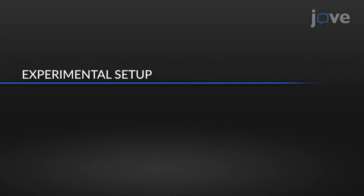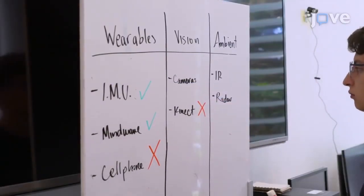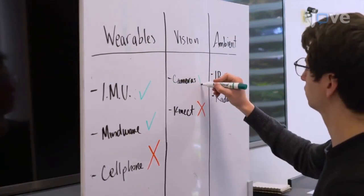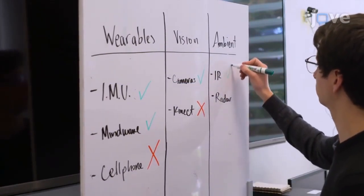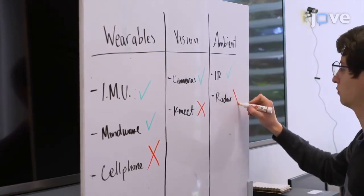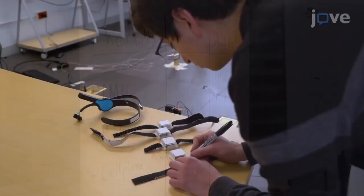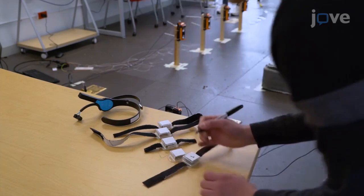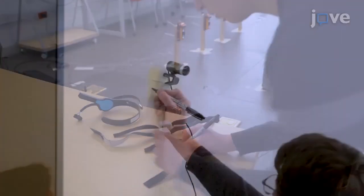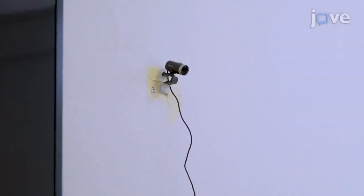Begin by setting up the data acquisition system to facilitate subject data collection and storage. Select the types of wearable sensors, ambient sensors, and vision-based devices required as sources of information, and assign an ID for each source of information, the number of channels per source, the technical specifications, and the sampling rate of each of them.